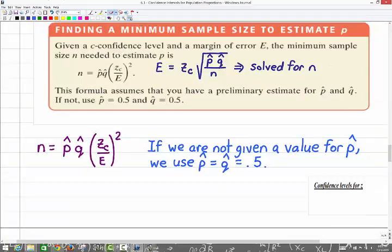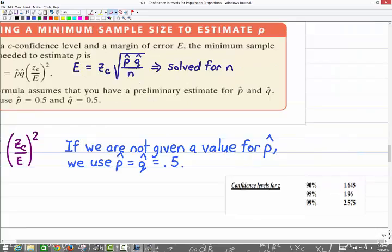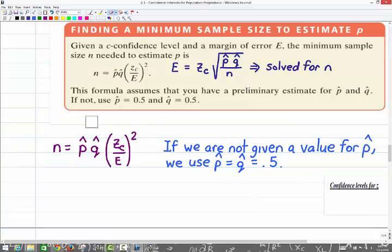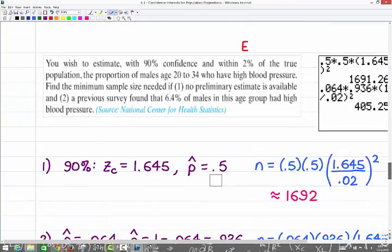So it tells you, and then of course, there are those three little confidence values again that we have on the other page. All right, so let's try this out. You wish to estimate with 90% confidence and within 2% of the true population the proportion of males aged 20 to 34 who have high blood pressure. So this actually has two parts. Like on an exam question, it would not be two parts. It would be one or the other. Find the minimum sample size if no preliminary estimate is available. And the second part says if 6.4% of males in this age group were known to have high blood pressure.